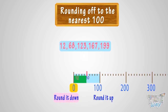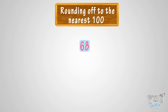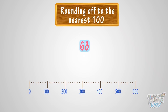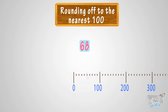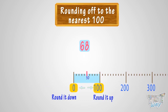Okay, let's take the next number: 68. We have to round 68 to nearest 100. Let's see where we can fit 68 on this number line — it is somewhere between 0 and 100. So we have two options: either round it down to 0 or round it up to 100. According to the rule, if the number comes after the 50 mark, the number is rounded up; if before the 50 mark, it is rounded down. Our number 68 is after the 50 mark, so we will round it up to 100.